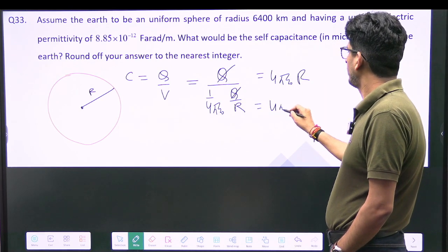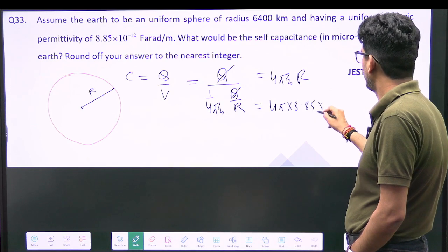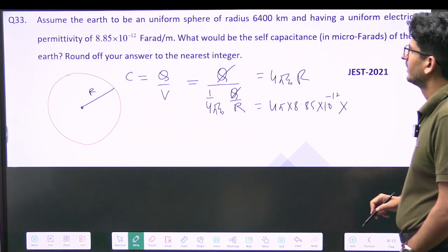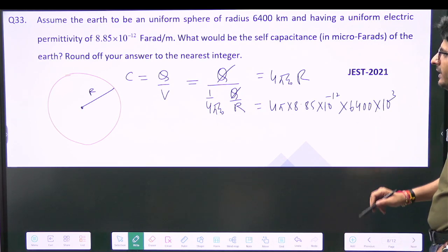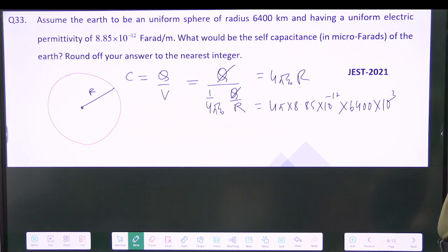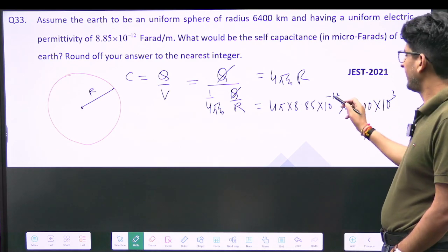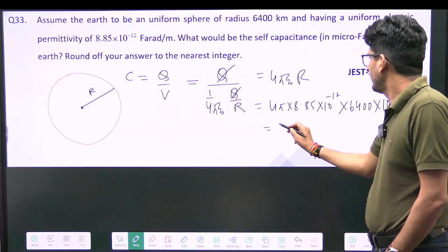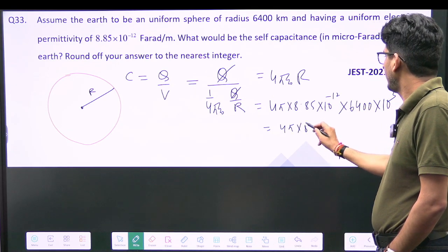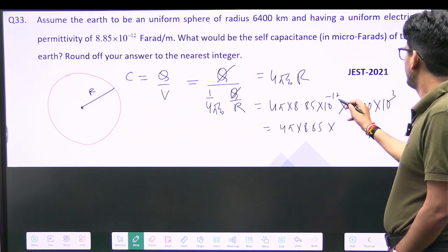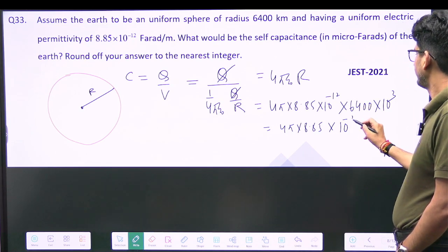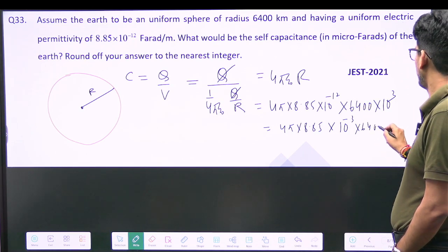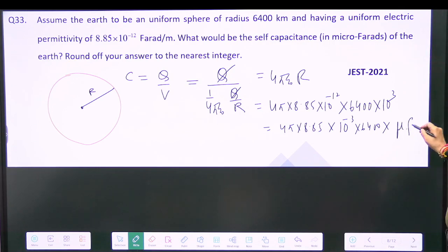So it will become 4 pi into 8.85 into 10 to the power minus 12 into R is 6400 into 10 to the power 3. And we have to write it in microfarads. So that means it will become minus 9, right? So it will become 4 pi into 8.85, this will become minus 9. So put it minus 3 here and into 6400 and this much microfarad.